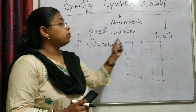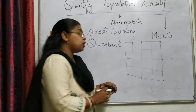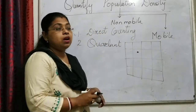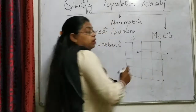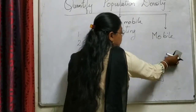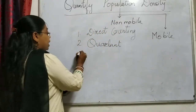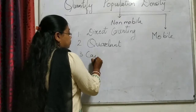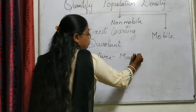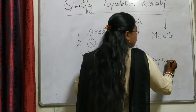Now if we talk about a mobile organism, it cannot be counted with a quadrat method, because once we have started the count, the mobile organism present here can move to another location after a few minutes. So for mobile animals, there is a specific method known as the capture, mark, and recapture method.